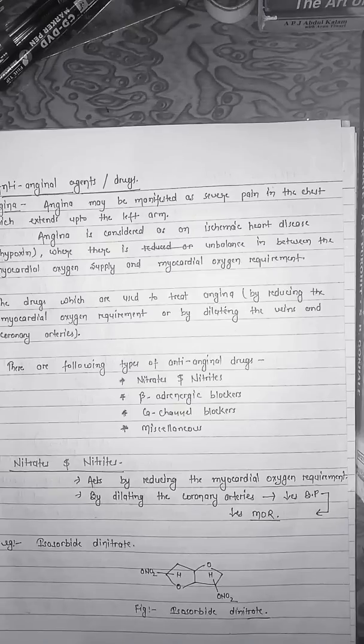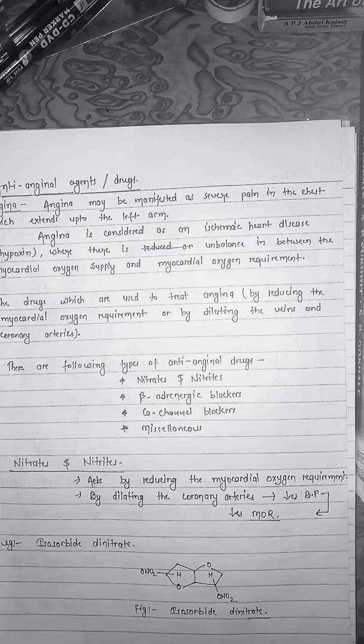There are the following types of anti-anginal drugs: nitrates and nitrites, beta-adrenergic blockers, calcium channel blockers, and miscellaneous agents. You will find the examples from your course book.